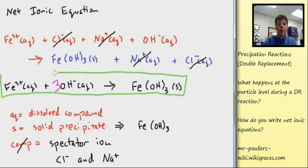So finally we'll put a box around our final version of our net ionic equation for this reaction. Fe3 plus, giving the charge of the ion, it was in the dissolved state.